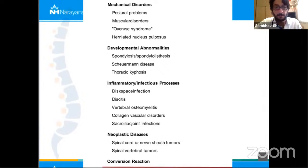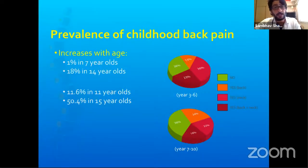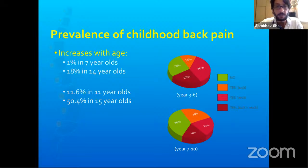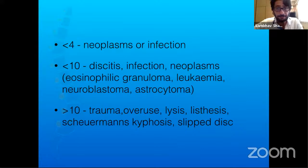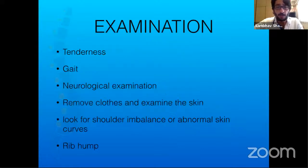Developmental conditions like spondylolisthesis, Scheuermann's disease, scoliosis, or kyphosis are more commonly seen after age nine or ten unless congenital. Inflammatory and infectious causes are more often seen in younger populations — so a four-year-old presenting with back pain is a red flag requiring investigation. Prevalence is higher in older children aged eleven to fifteen, with back pain more often postural or sports-related. Gymnasts doing daily training have a higher chance of developing lysis.